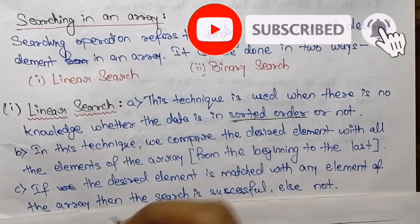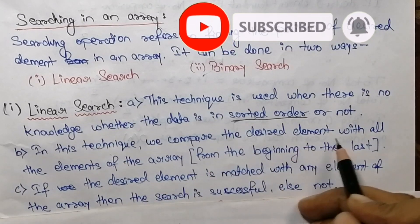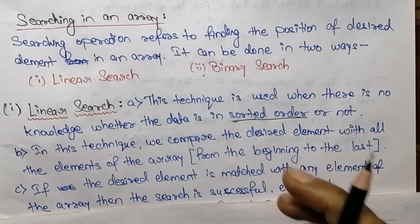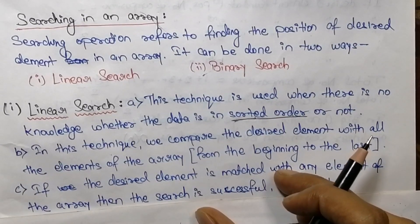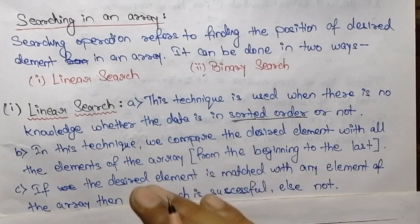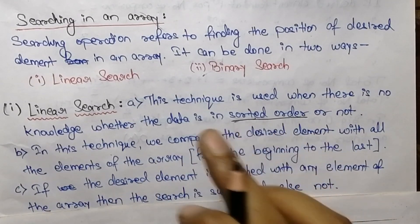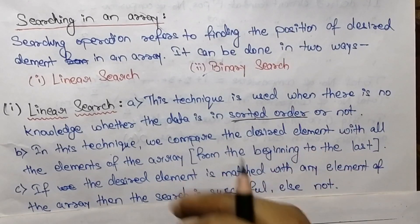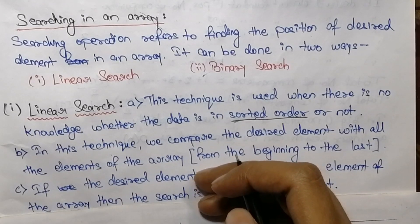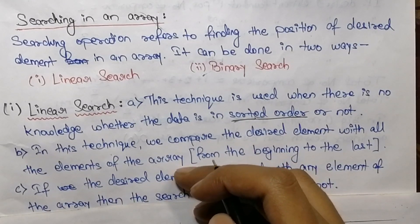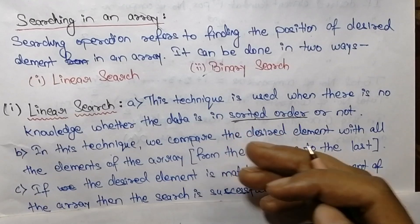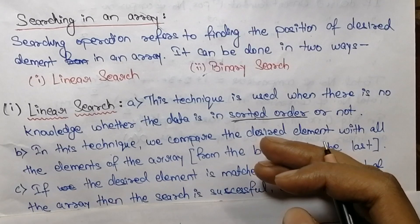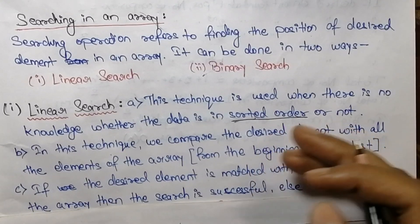In this technique, we compare the desired element with all the other elements of the array. We fix a desired element that we need to find, and we compare all the elements of the array with that desired element. We start comparing the desired element with the element present at the first position, then with the element at the second position, and so on.